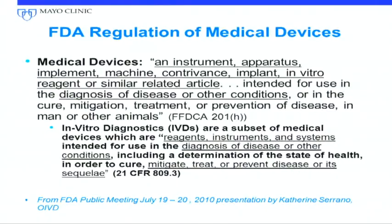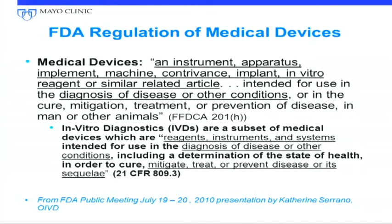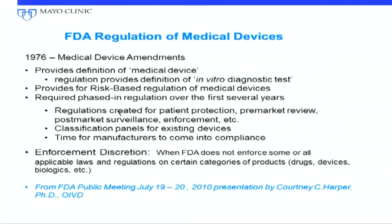When the direct-to-consumer genetic testing was occurring a few years ago, the FDA got concerned about the complexity of the testing — it's not a simple potassium or sodium, or even a specific SNP or mutation. Now it's multiple data points, and this becomes very complex as far as validity and utility. If you remember anything from what I say today: a test has to be useful, it has to be of value, and it has to be safe. It has to be analytically and clinically validated.